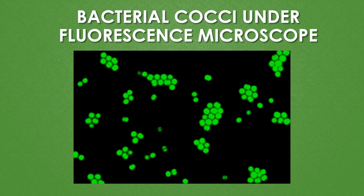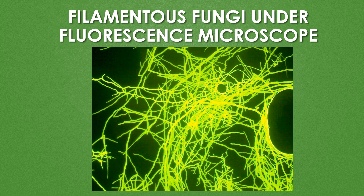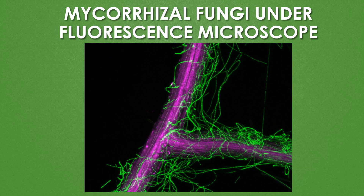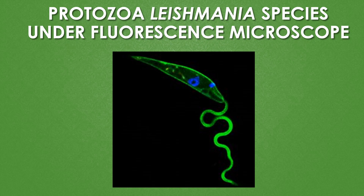This is the image of bacterial cocci under the fluorescence microscope. This image shows bacterial rods under the fluorescence microscope. This image shows filamentous fungi under the fluorescence microscope. This image shows the mycorrhizal association of fungi with plants under the fluorescence microscope. This image shows the protozoa Leishmania species under the fluorescence microscope.